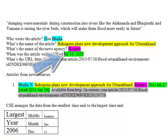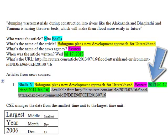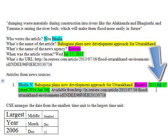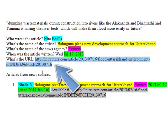So instead of July 17, 2013, we start with the largest unit — the year, 2013 — and end with the smallest, the day, the 17th. The month in CSE is abbreviated to the first three letters of the month. Even if the month name is only four letters long, you still always abbreviate it to the first three letters. Finally, we want to list the URL.